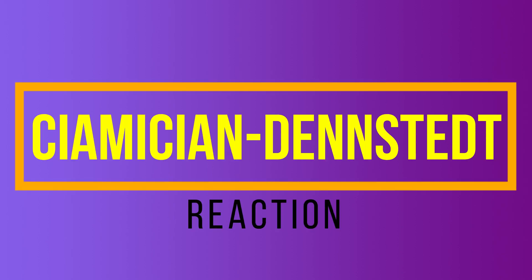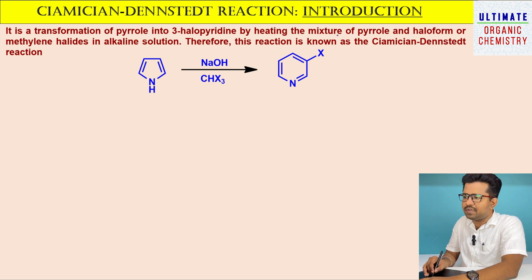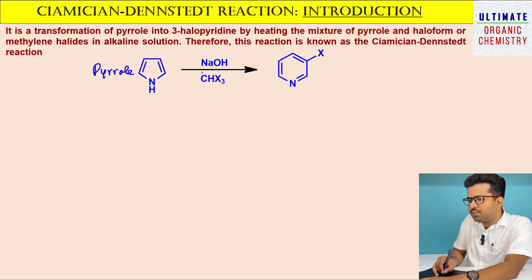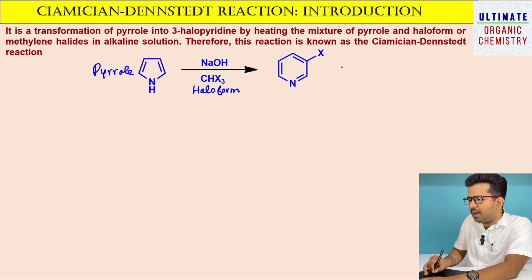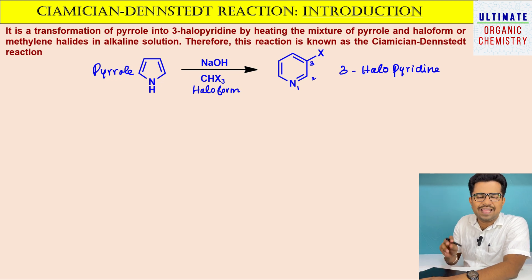I am going to discuss this reaction in detail, along with a couple of previous year CSIR questions. First, let us discuss what is the meaning of the Ciamician-Dennstedt Reaction. It is a transformation of pyrrole into 3-halopyridine by heating the mixture of pyrrole and haloform or methylene halide in alkaline solution. This pyrrole molecule is treated with sodium hydroxide along with haloform to form 3-halopyridine. This reaction is called the Ciamician-Dennstedt Reaction.